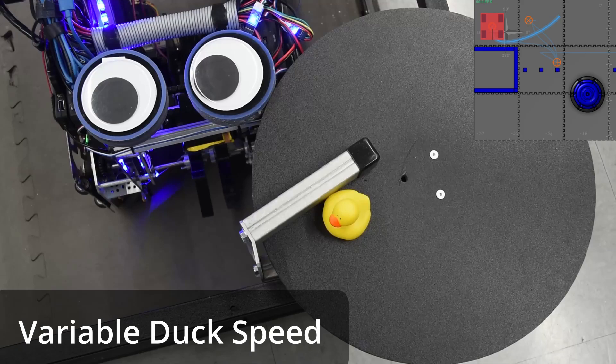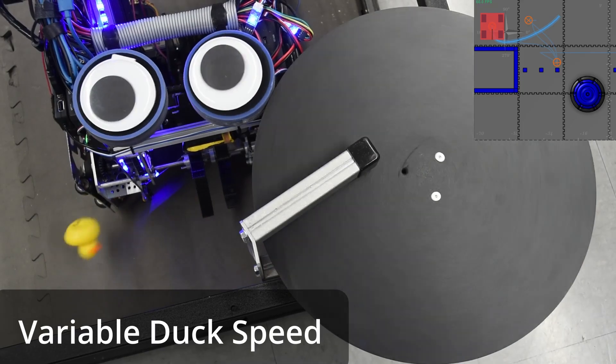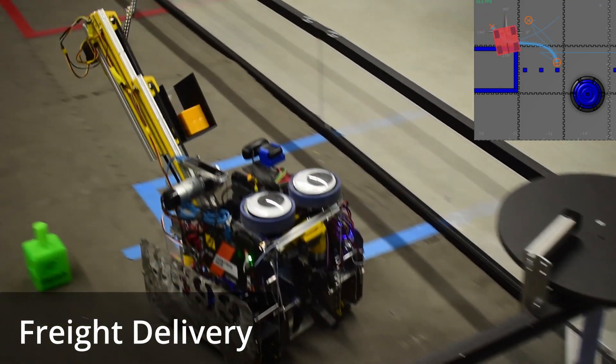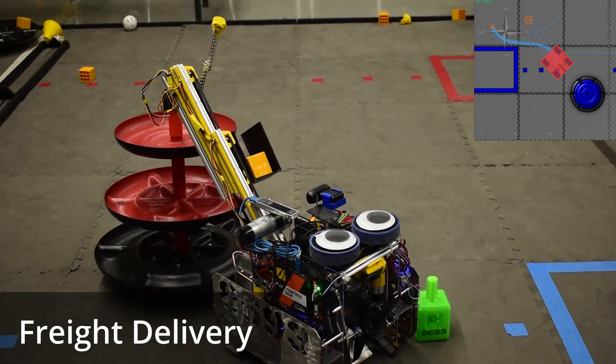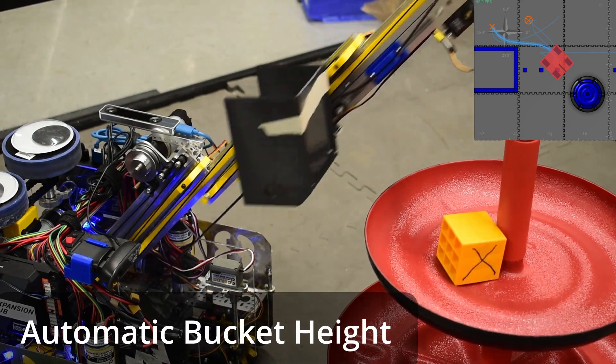Duck spinning starts slowly, but then speeds up at the end to throw the duck further away from the carousel. The robot is able to deliver to any of the three heights determined by the position of the barcode. Using trigonometry, the robot is able to set the bucket to a specified height.